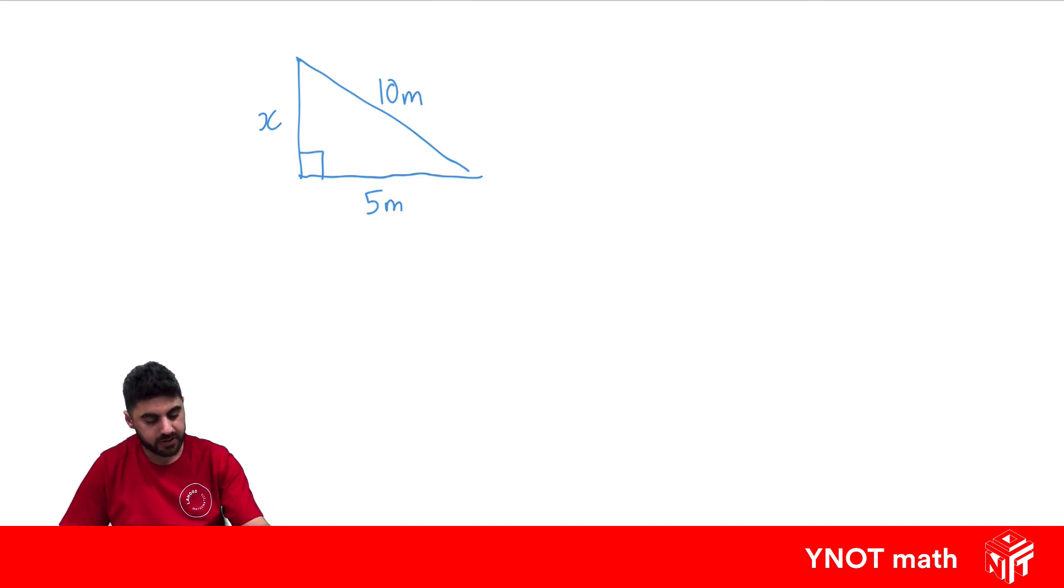So using Pythagoras' theorem for a shorter side, the shorter side squared equals the hypotenuse squared minus the other shorter side squared. So X squared equals 10 squared, which is 100, minus 5 squared, which is 25.